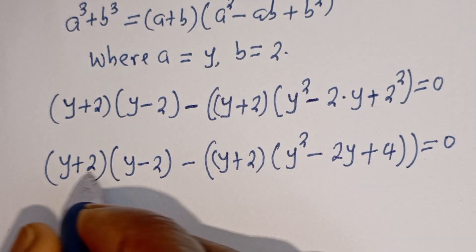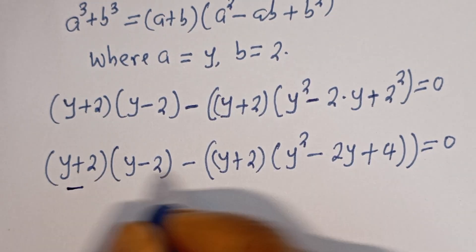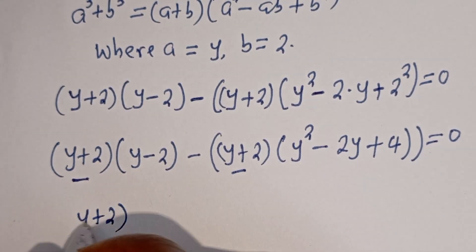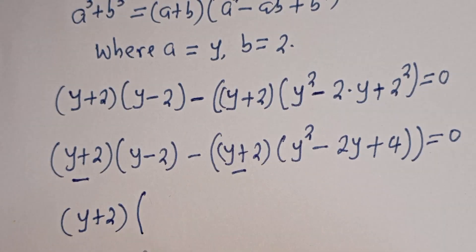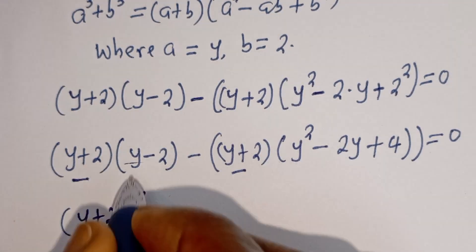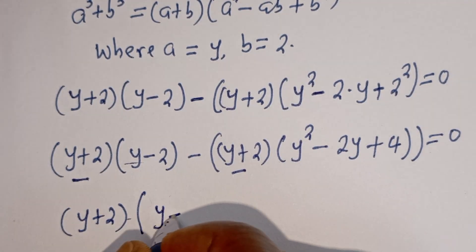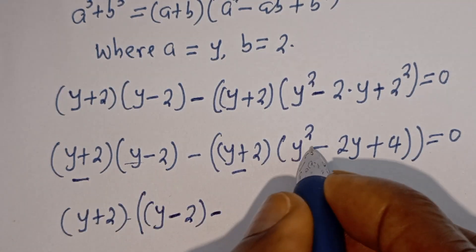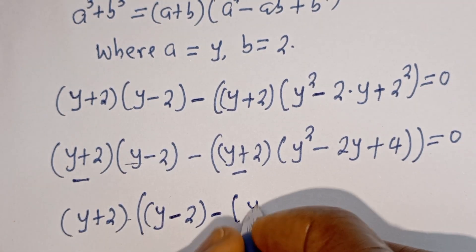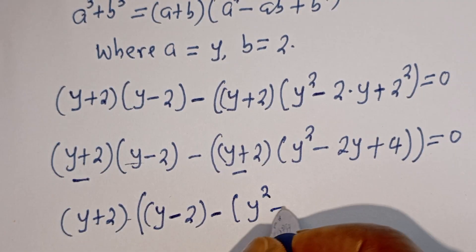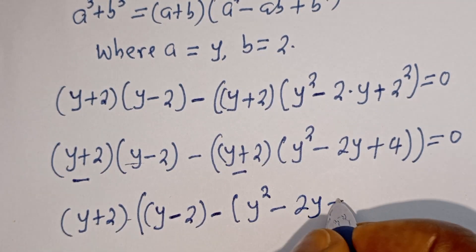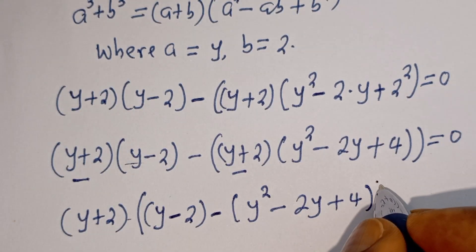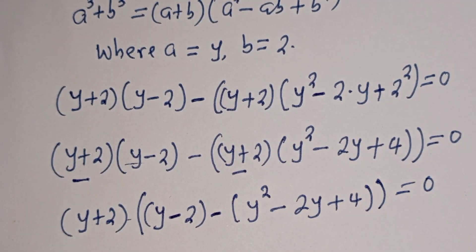Then (y + 2) is common in both terms. Let's factor it out. Dividing through, we get (y + 2) times (y − 2 − (y squared minus 2y plus 4)) is equal to 0.